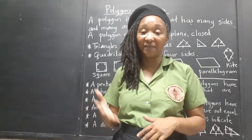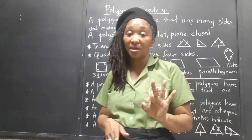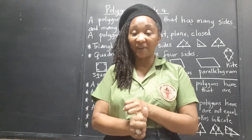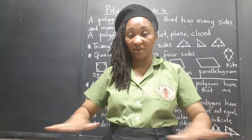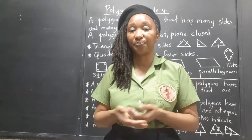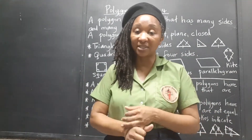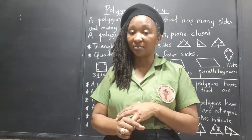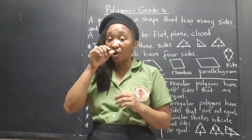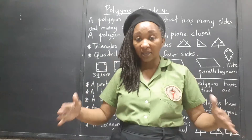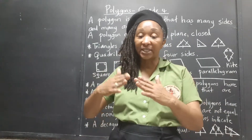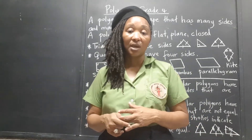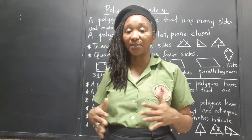All three criteria must be met. It must be flat — a plane figure, not raised up, not three-dimensional. A box is not a polygon; a ball is not a polygon. It cannot be curved; all sides must be straight. And all the corners and sides must be closed.